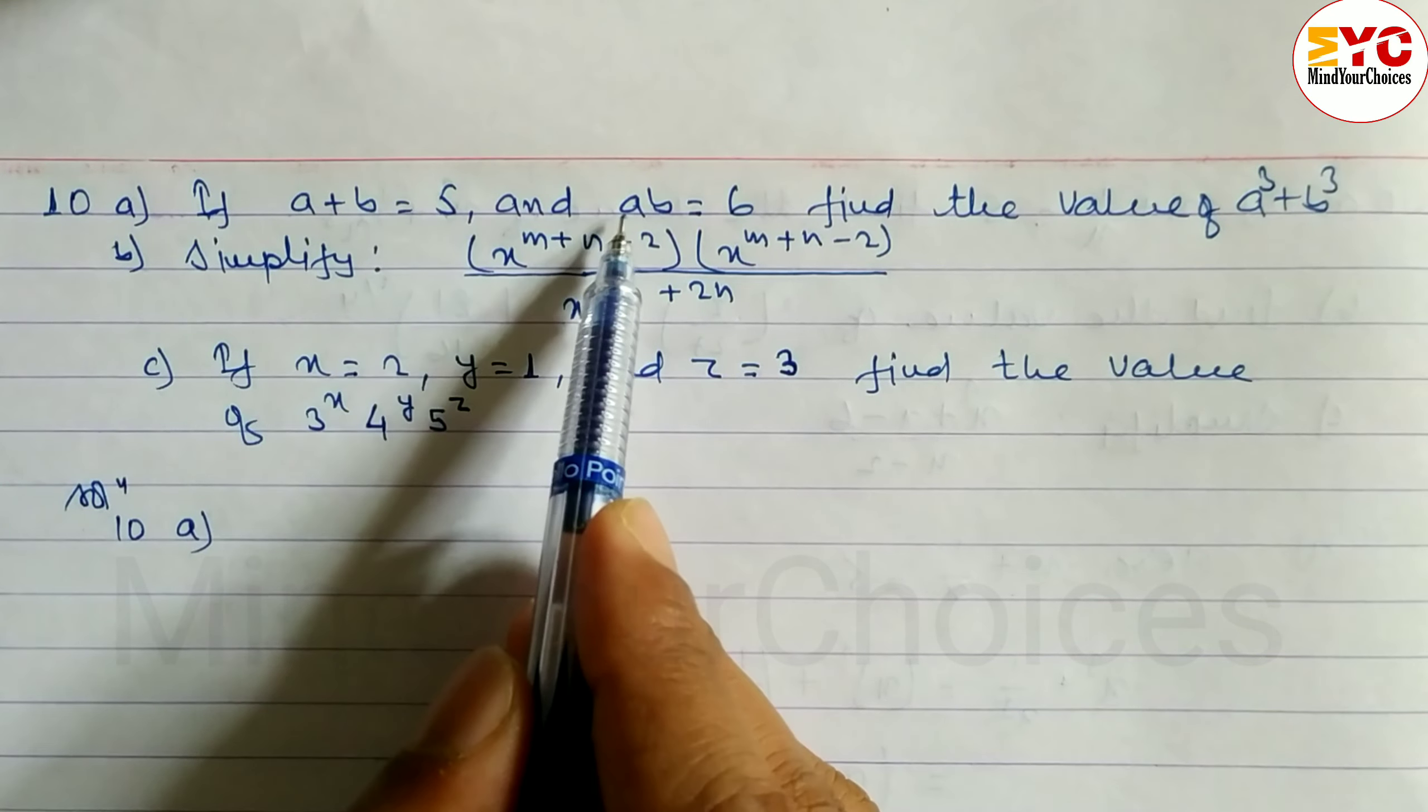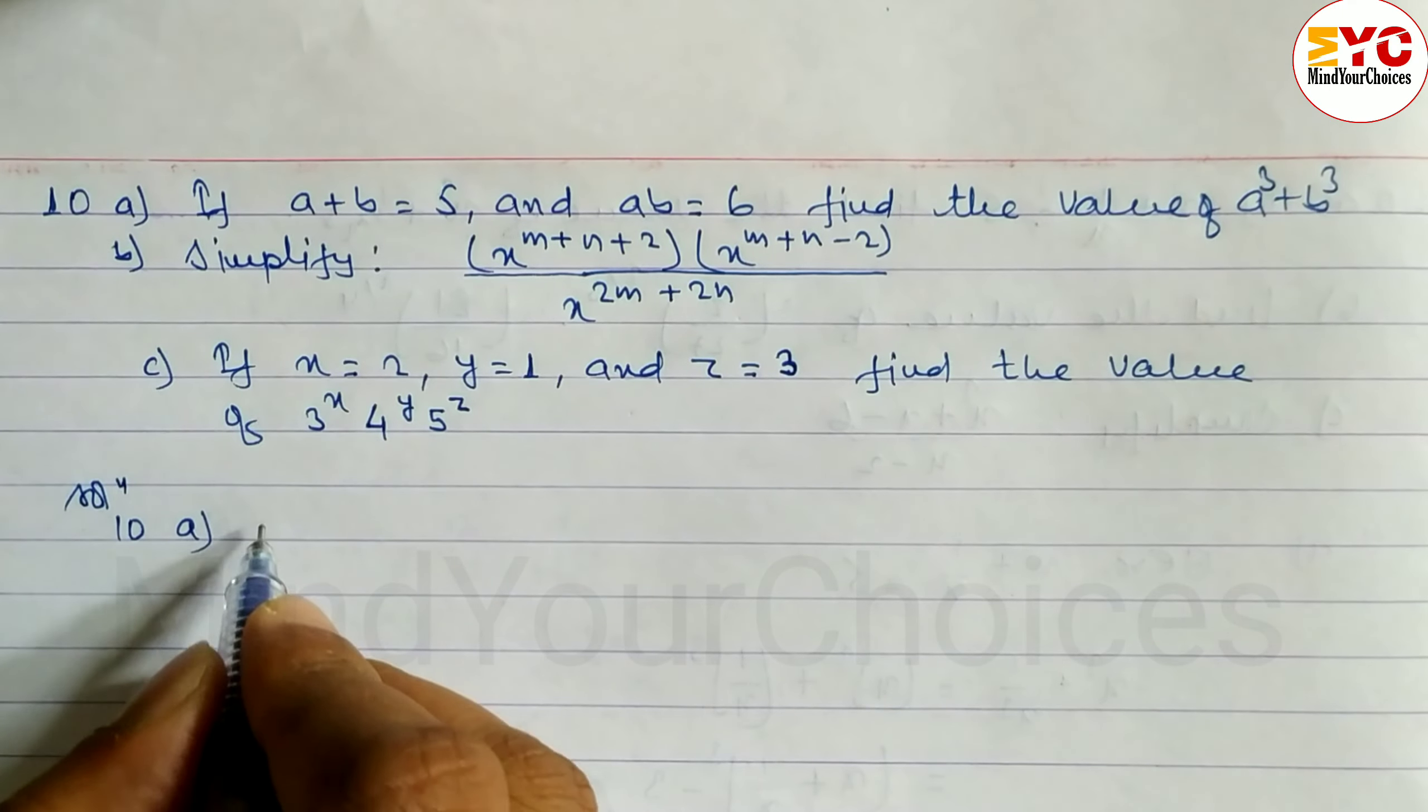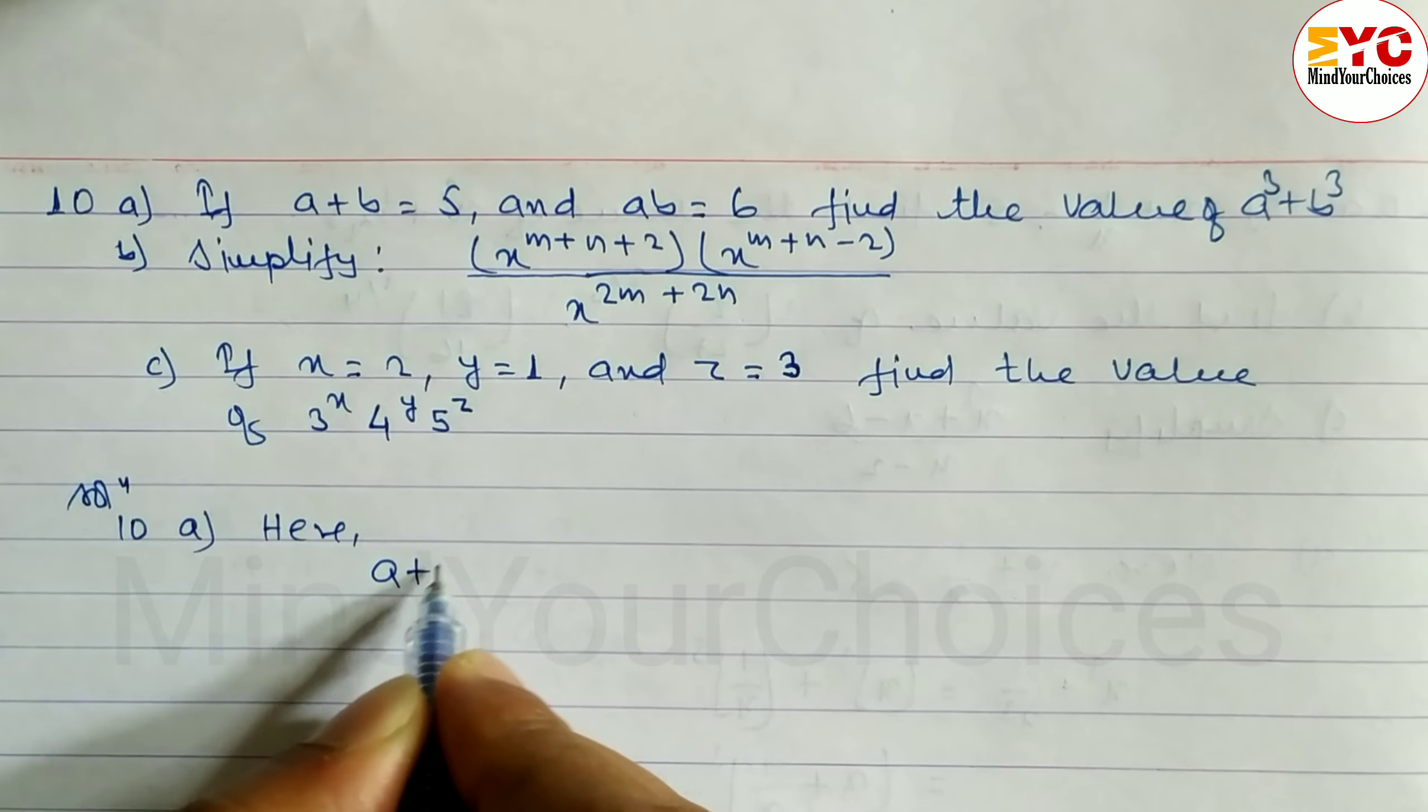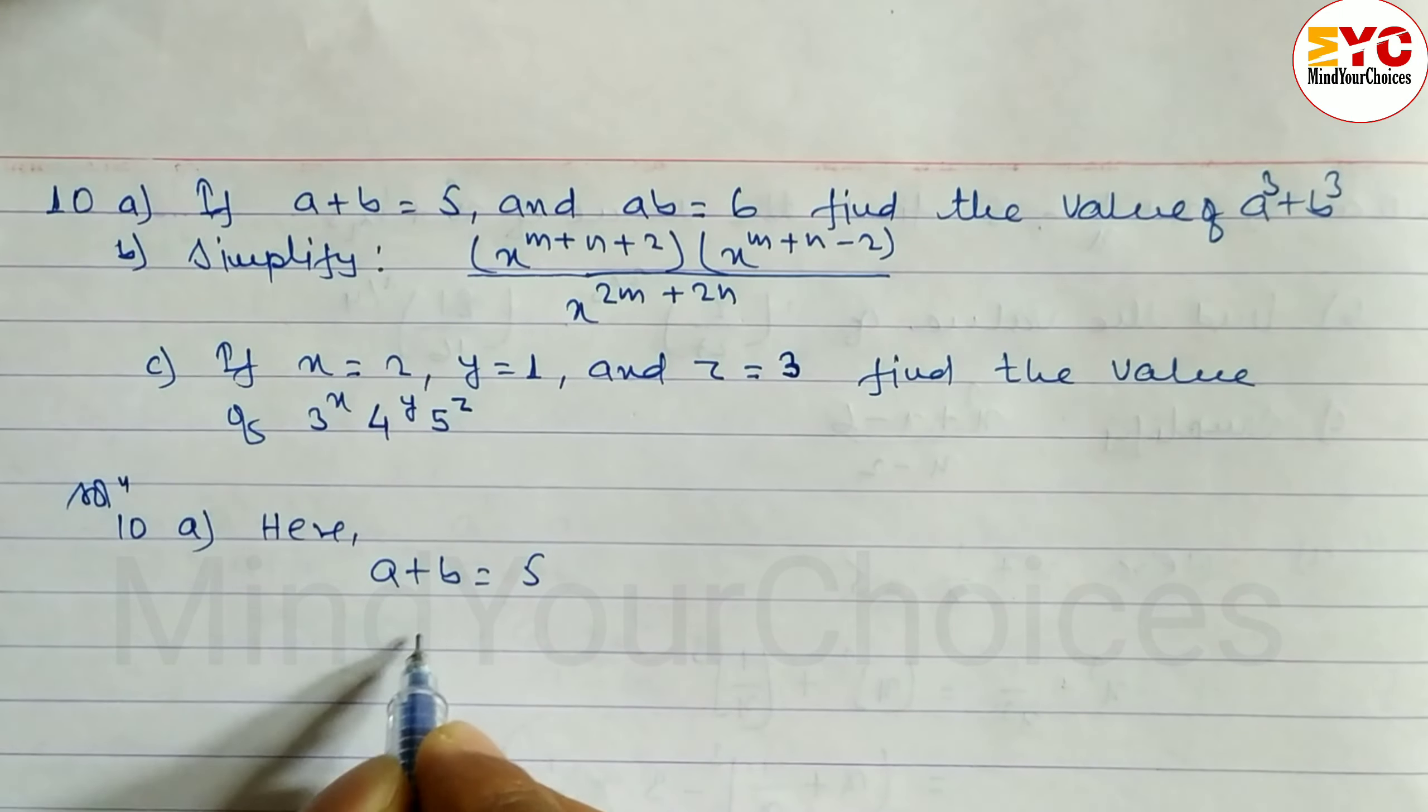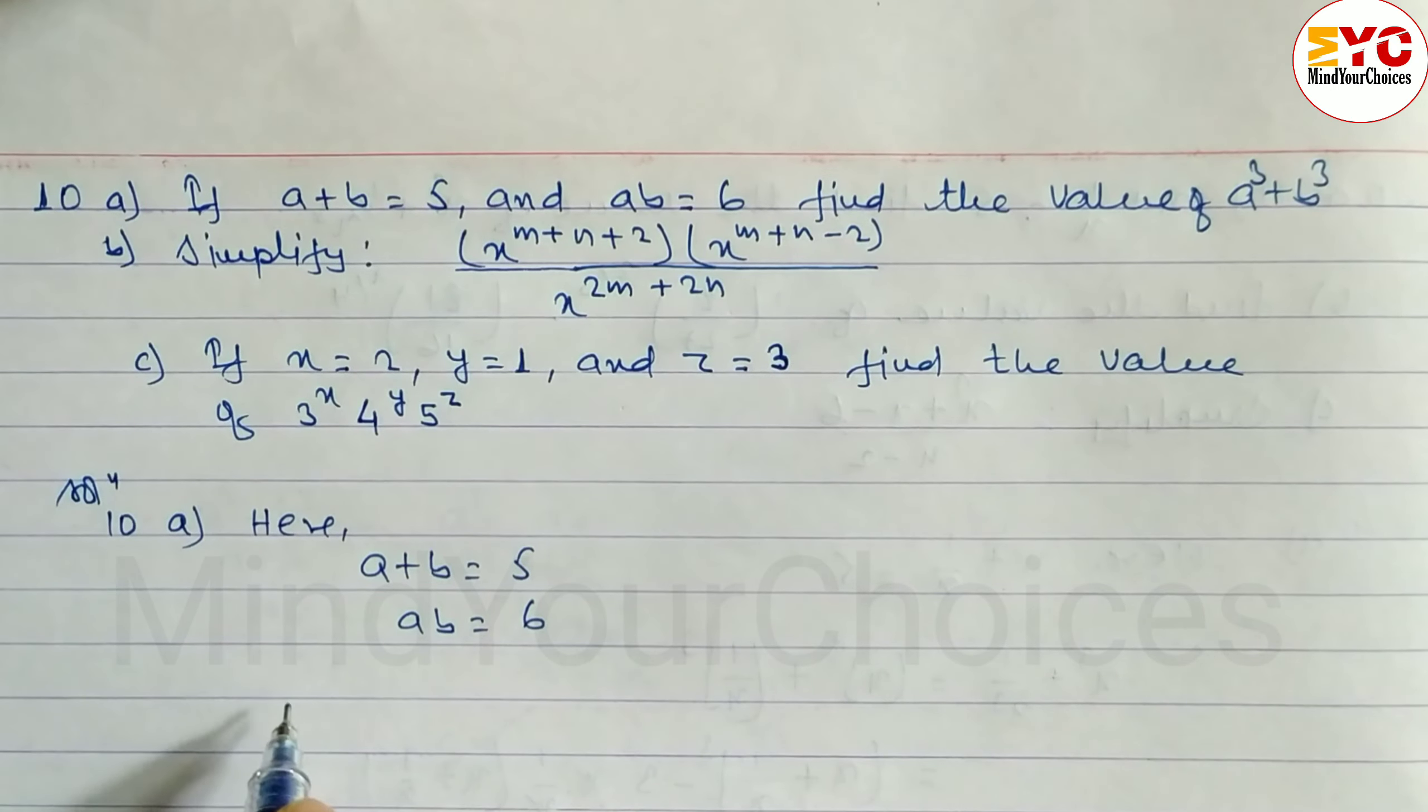If A plus B is equal to 5 and AB is equal to 6, find the value of A cube plus B cube. Here A plus B is 5 and AB is 6. We have to find out A cube plus B cube.